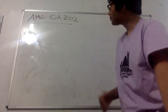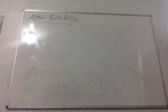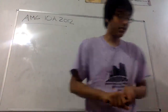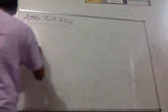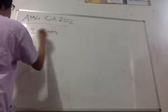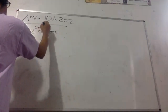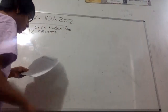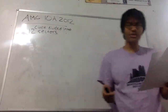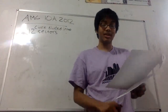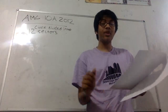So the first problem is the following: Mary divides a circle into 12 sectors. The central angle of these sectors, measured in degrees, are all integers and they form an arithmetic sequence. What is the degree measure of the smallest possible sector angle?